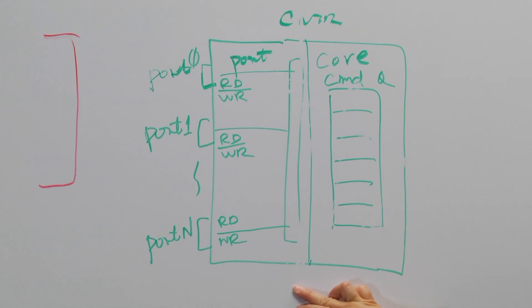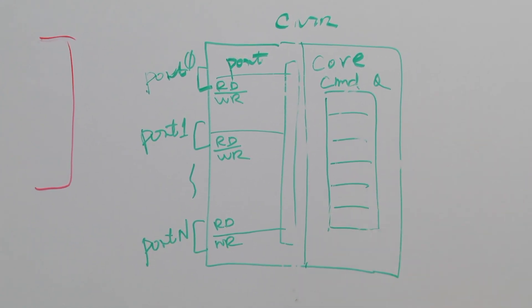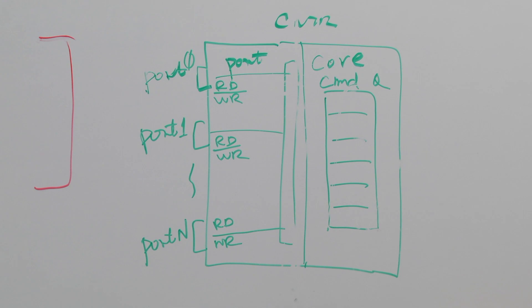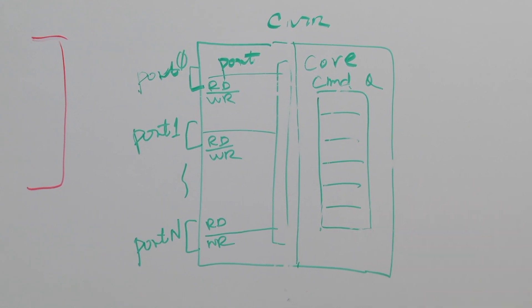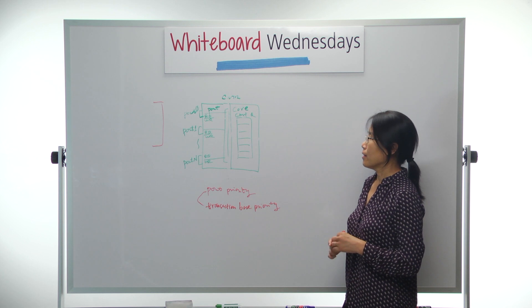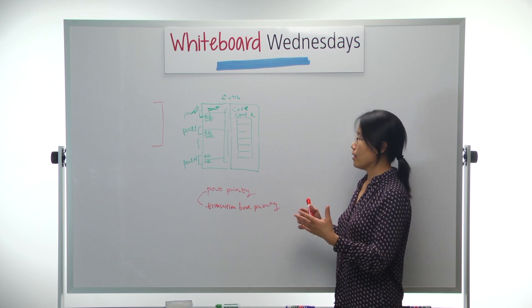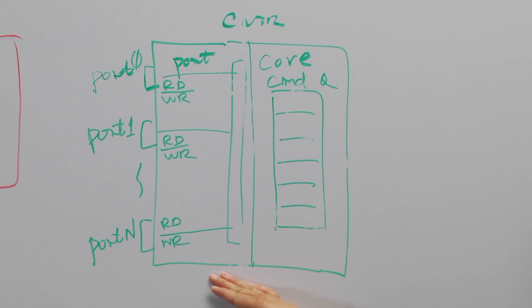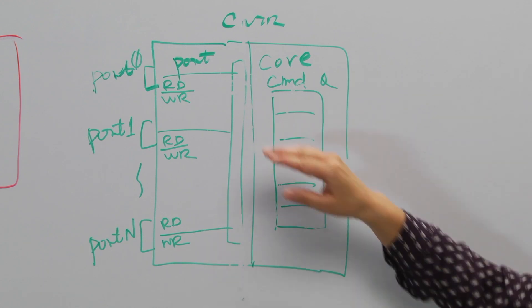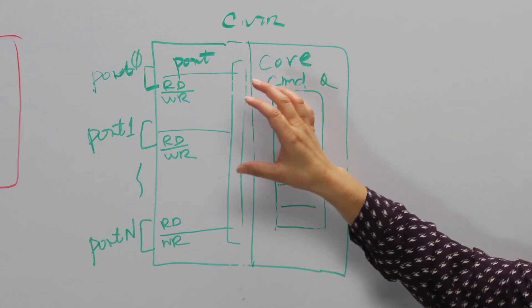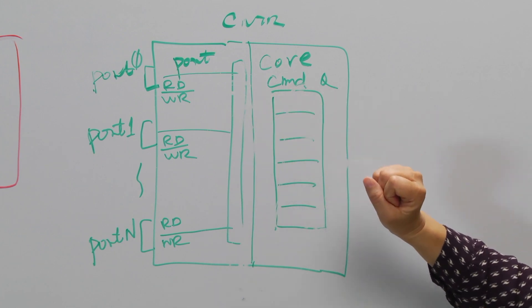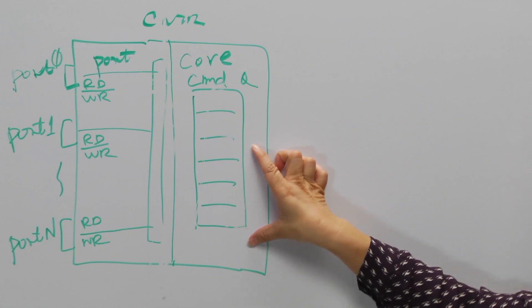The arbitration logic will pick up the highest priority command from all the ports and put into the command queue if there's space. So what if, for one port, the command has higher priority, but the other port has the command with lower priority? It possibly will be blocked. So we set a limit for each port, how much percentage they can have the command in the command queue.